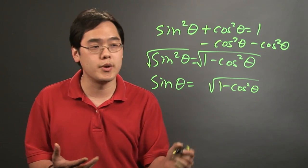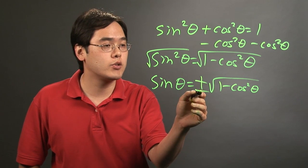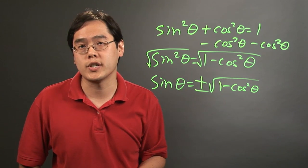But you do know since you're taking the square root of both sides, it's plus or minus. So sine theta equals plus or minus the square root of 1 minus cosine squared theta.